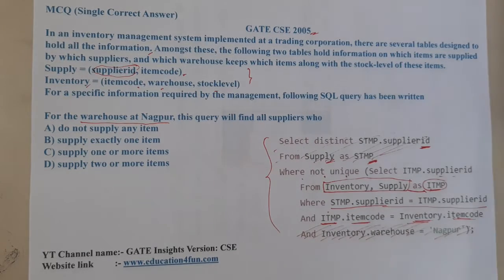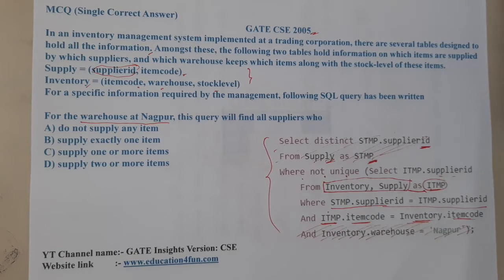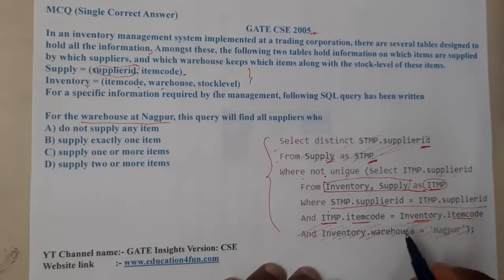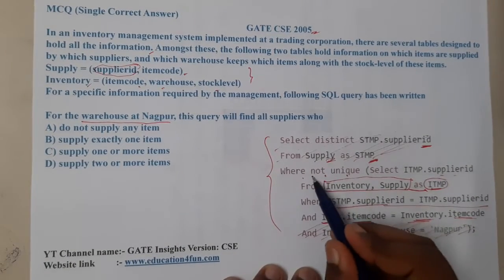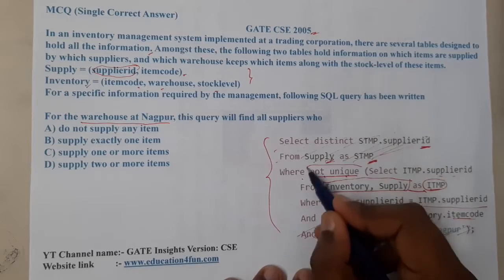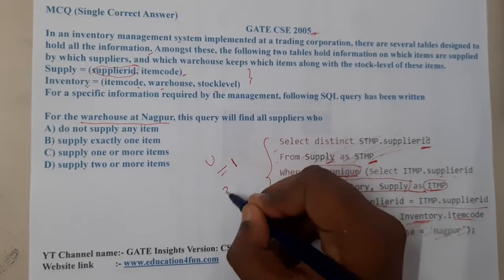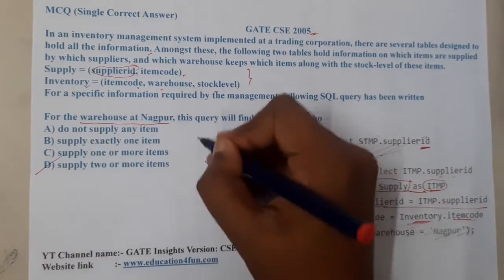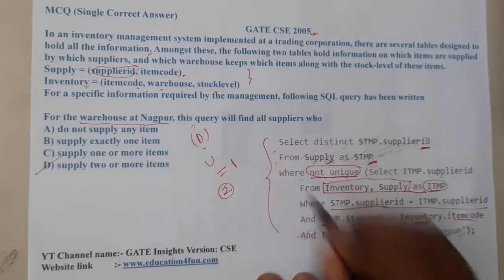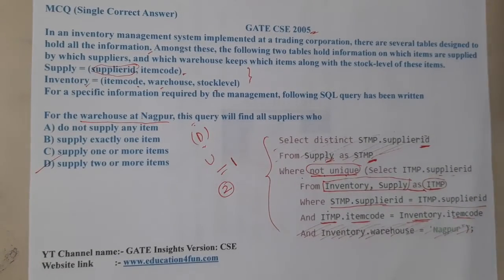Option A says do not supply any item, option B supplies exactly one item, option C supplies one or more items, option D supplies two or more items. Without even fully solving, I can analyze this: NOT UNIQUE means more than one occurrence — equal to two or more. So option D is the correct answer.